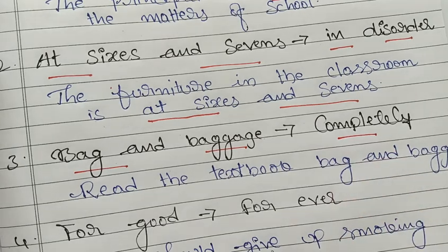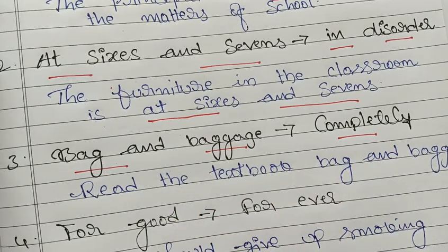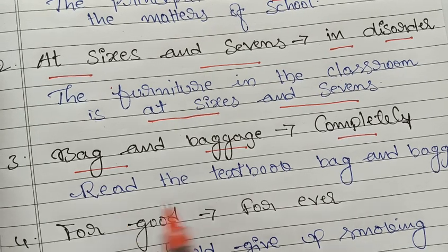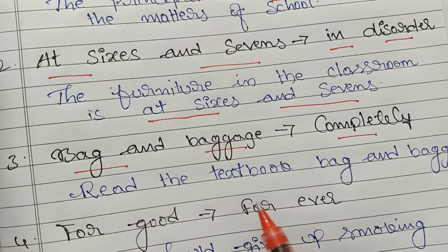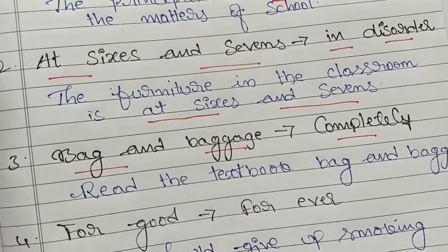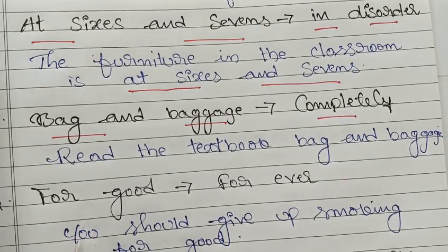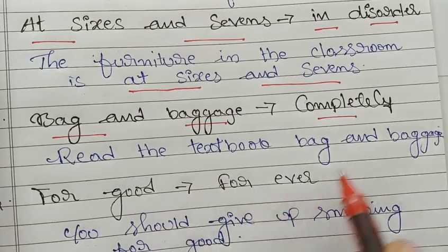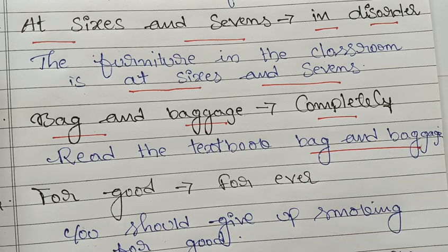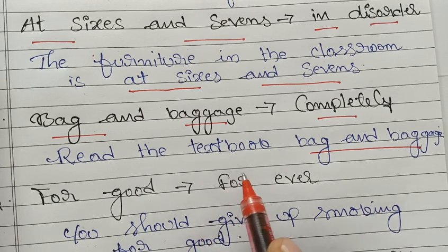The third phrase is 'bag and baggage,' which means completely or fully. Don't think bag and baggage refers to the luggage in which we pack our things — it means completely, fully. See the example: 'Read the textbook bag and baggage,' which means when the teacher says this to the students, you may wonder what the teacher is telling.